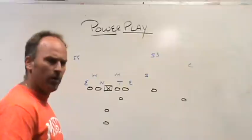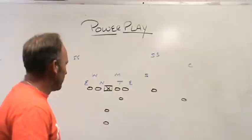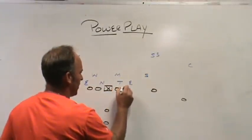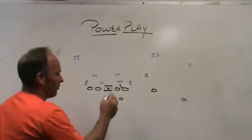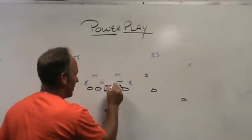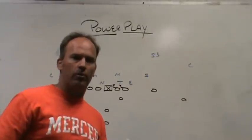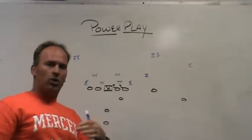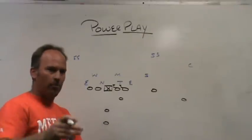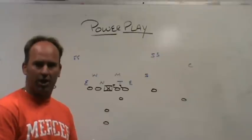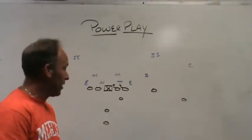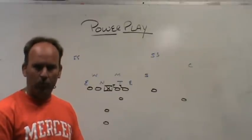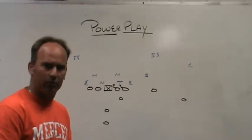The first thing to look at is just base standard power. Your base standard power play has a front side down gap scheme. Your front side tackle is responsible for the B gap, your front side guard is responsible for the A gap. You always want to look for double teams to get great first level movement, but you can't just point to guys and say we're going to double here — you have to have rules so when the front changes, your kids can live by those rules.